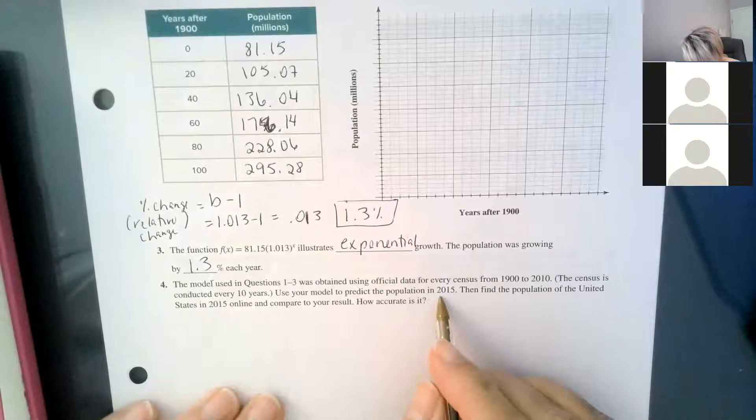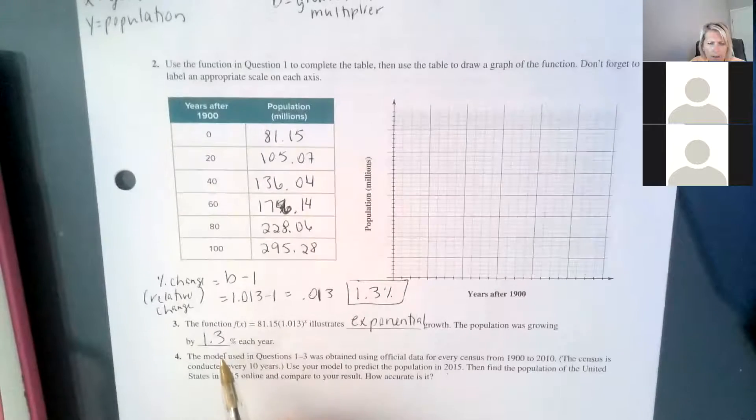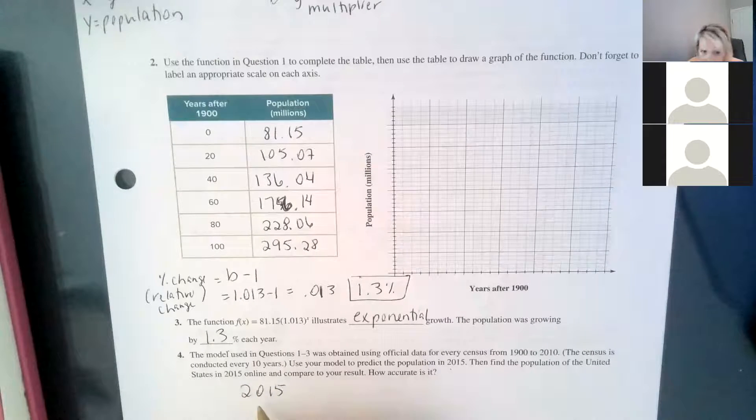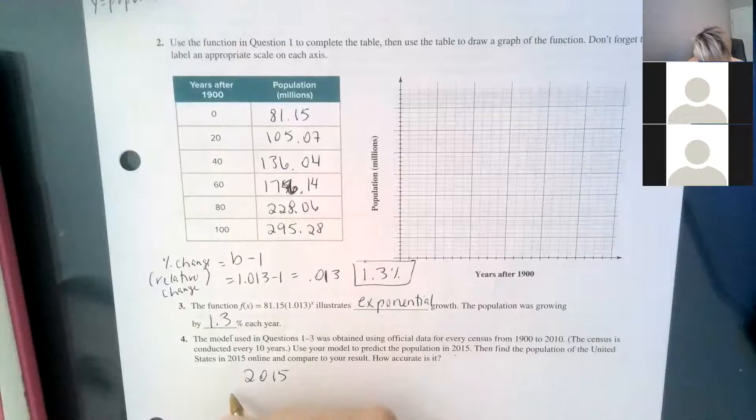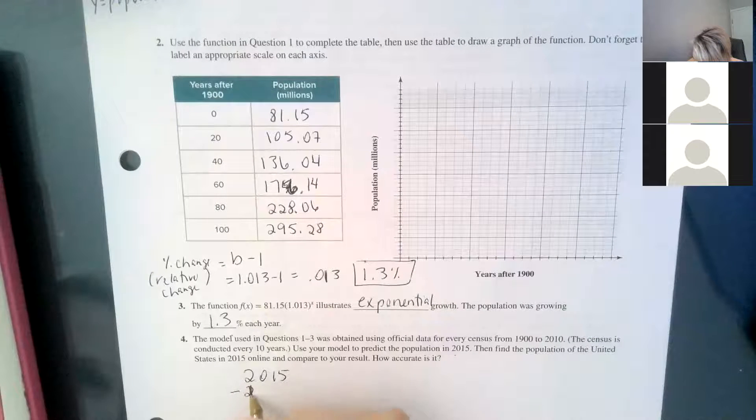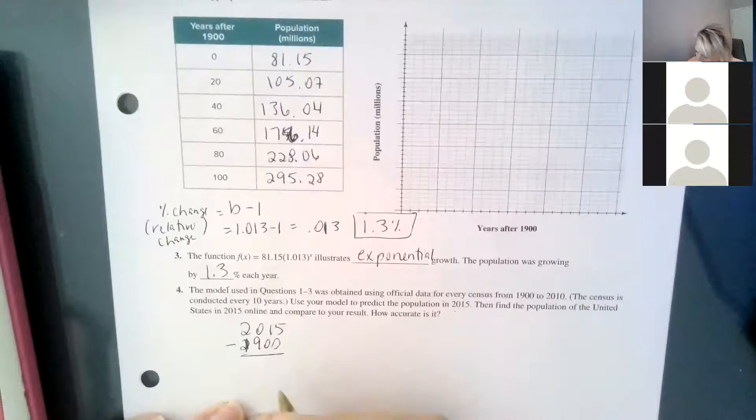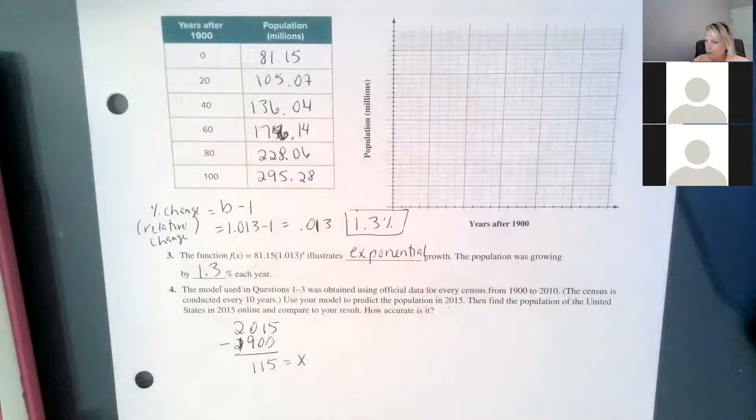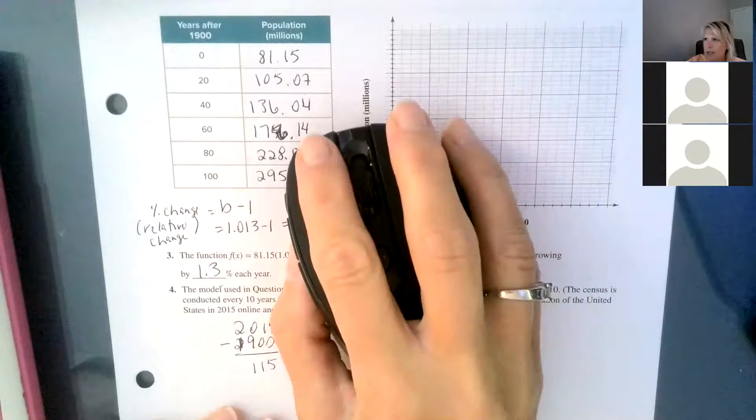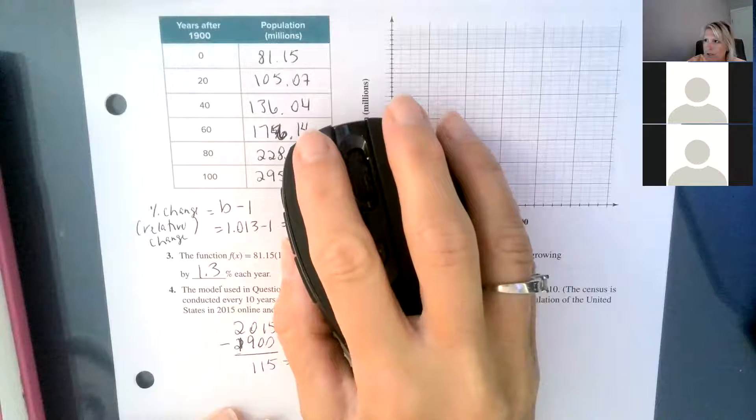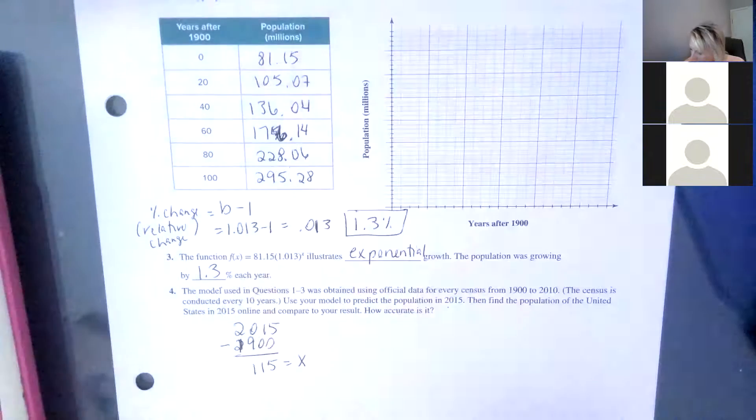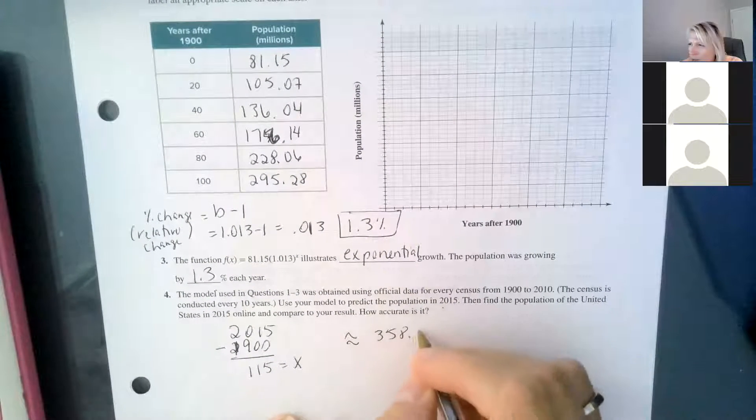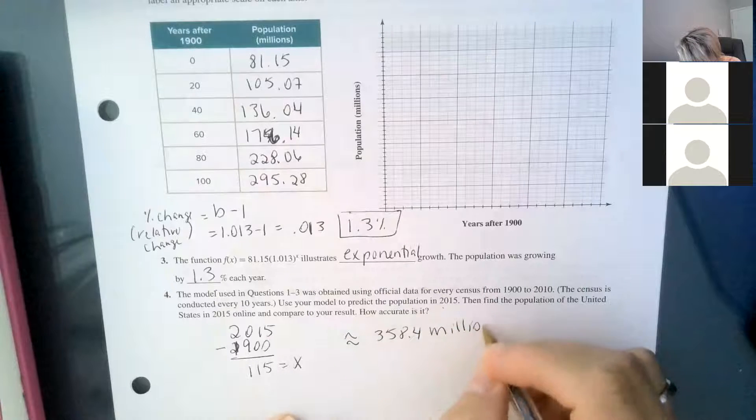So to predict the population 2015, what year would that be that I'm putting into my function? 115. And how did we get that? 2015 minus 1900. So 2015 minus 1900 is 115 years. So x is 115. So we can do this a number of ways, but if you want to go to Desmos, you can actually just go to your table and type a new x that says 115, and it should tell you that they're predicting approximately 358.4 million people.